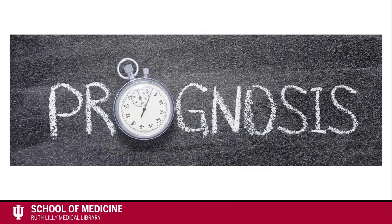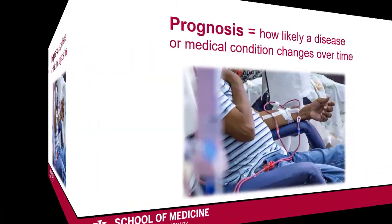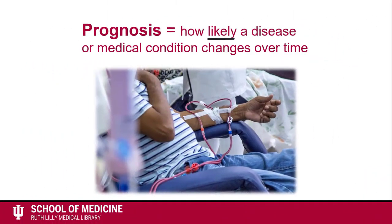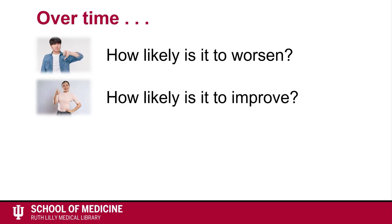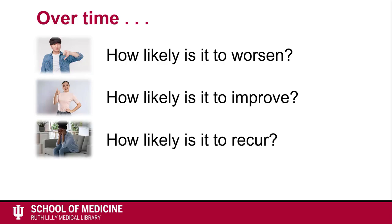First, let's define prognosis. Prognosis is how likely a disease or medical condition changes over time. Specifically, over time: how likely is it to worsen? How likely is it to improve? How likely is it to recur? How likely will someone survive?